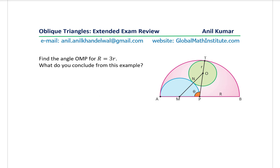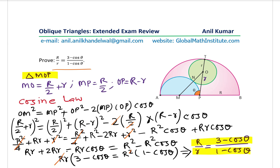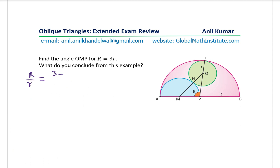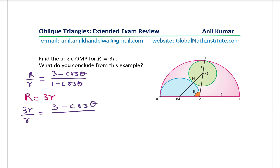The next question is: find angle OMP for R = 3r. We use the relation we just proved: R/r = (3 − cos θ)/(1 − cos θ). Substituting R = 3r gives 3r/r = 3, so we need (3 − cos θ)/(1 − cos θ) = 3.